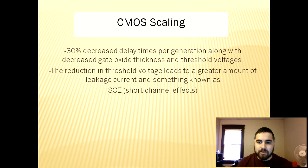As time moves on, devices shrink in size due to CMOS scaling, which is the scaling in size of transistors. Every generation, there's a 30% decreased delay time in transistors, along with decreased gate oxide thickness and threshold voltage. The reduction in threshold voltage, however, leads to a greater amount of leakage current, which can be attributed to several different types of leakage.